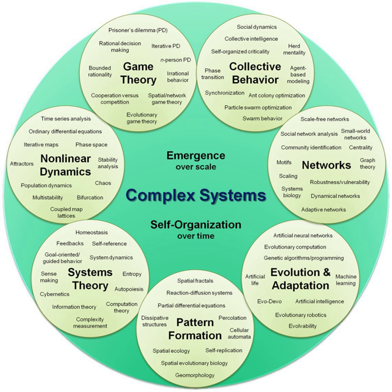Complex adaptive systems are special cases of complex systems that are adaptive in that they have the capacity to change and learn from experience. Examples of complex adaptive systems include the stock market, social insect and ant colonies, the biosphere and the ecosystem, the brain and the immune system, the cell and the developing embryo, cities, manufacturing businesses, and any human social group-based endeavor in a cultural and social system such as political parties or communities.